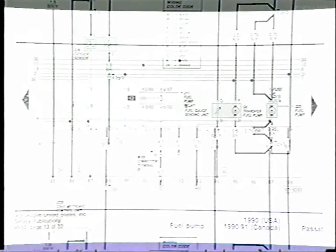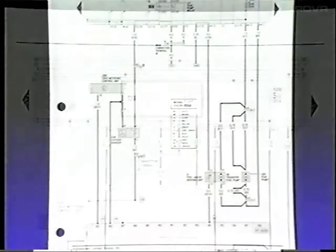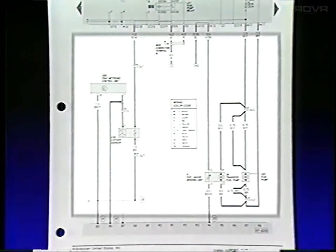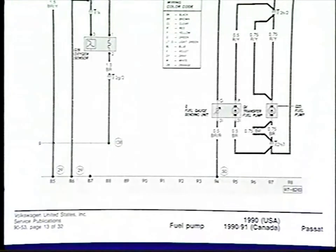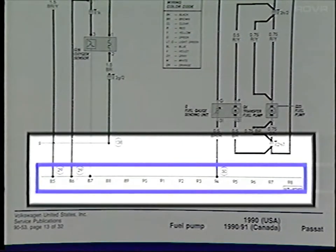The source of the power, such as the fuse relay panel or a relay, is usually located at the top area of the diagram. The current consumer or component being operated or controlled is usually located in the center area of the diagram. The circuit ground connections are then located at the bottom of the diagram, with the bottom line representing the vehicle body where the ground connections are attached.